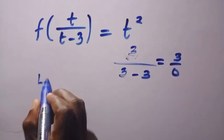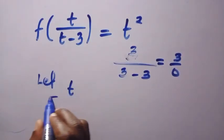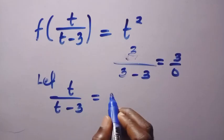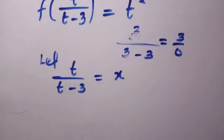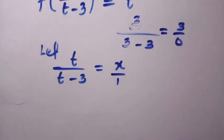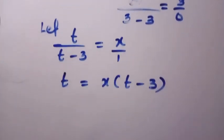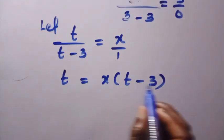Let's say we let t divided by t minus 3 to be equals x. Then we make t the subject of this formula by cross multiplying as we have t equals x into bracket of t minus 3. Having this, we are going to open this parenthesis.